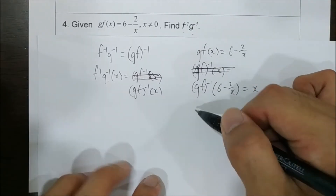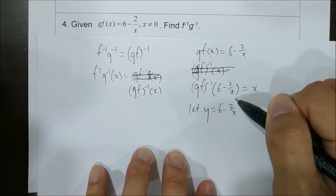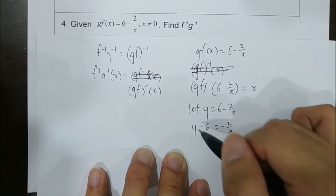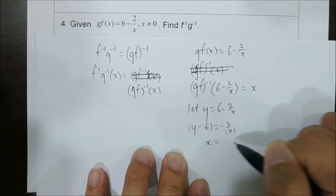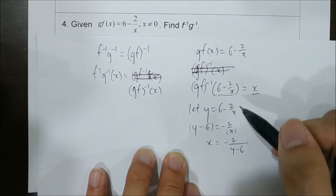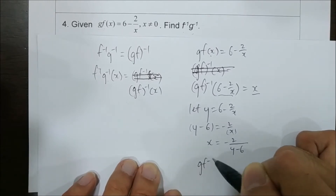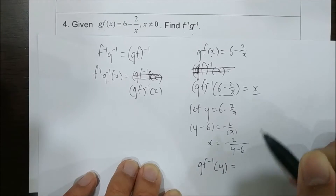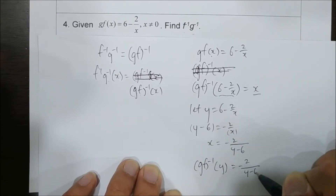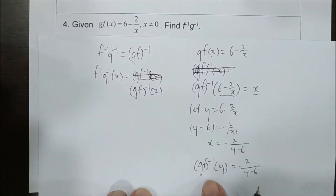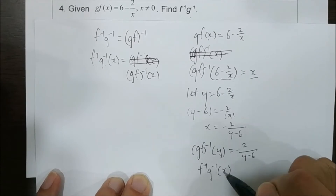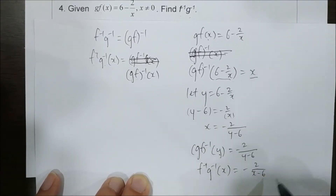To find the inverse, we let y equals to 6 minus 2x. Then move the rest: y minus 6 equals to negative 2x, so x equals to negative 2 over y minus 6. Then we replace x with y and y with x. So (gf) inverse of y equals to negative 2 over y minus 6. Rewriting in terms of x: (gf) inverse of x equals to negative 2 over x minus 6. Since this equals f inverse g inverse, that is the answer.